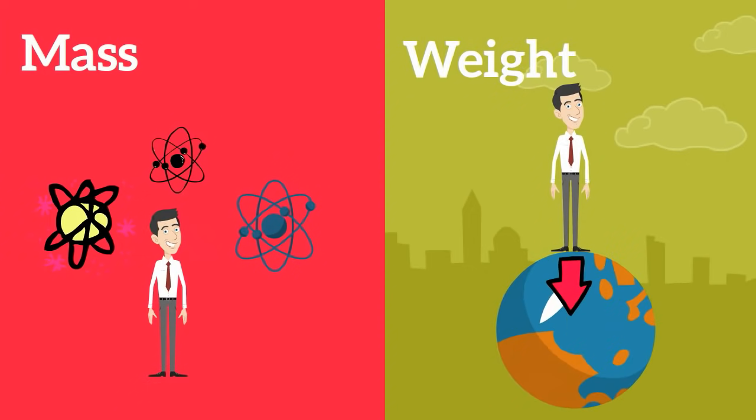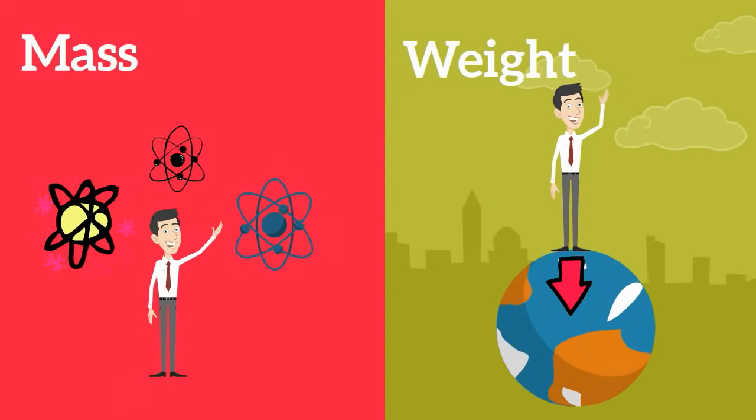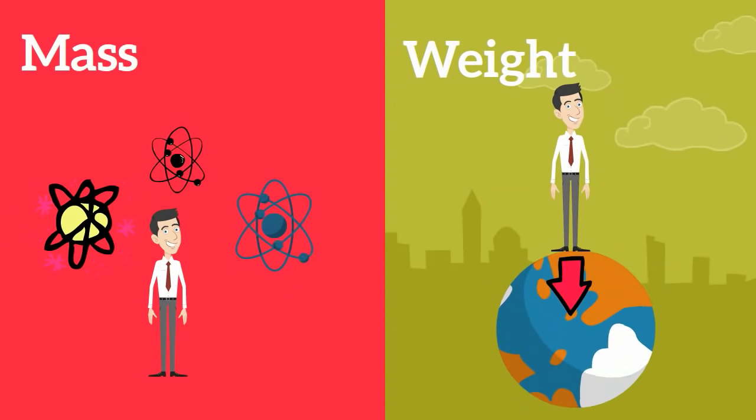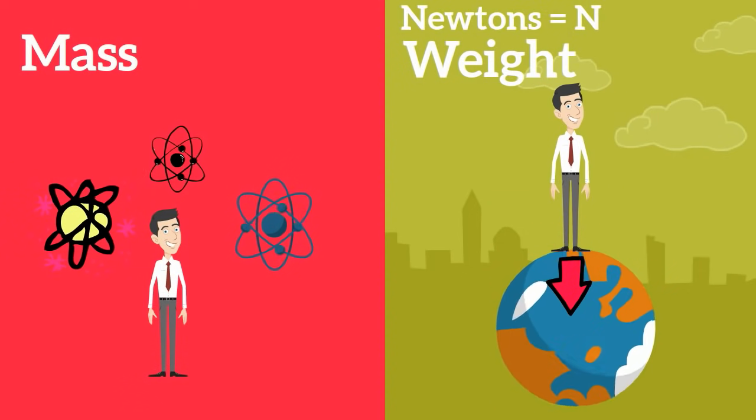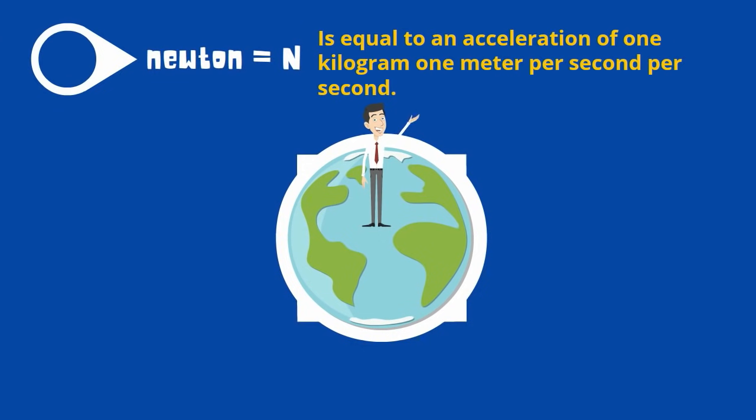Weight is a measure of the force that gravity is pulling on the same object. Gravity is a force and technically should be measured in newtons. A newton is equal to the acceleration of 1 kilogram 1 meter per second per second.